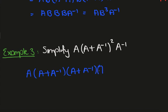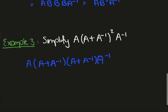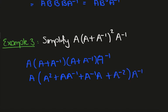So we'll have an A inverse there. Okay, so I'll have A squared plus AA inverse plus A inverse A plus A to the minus 2, A inverse.